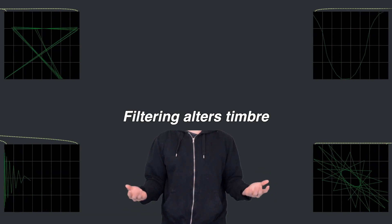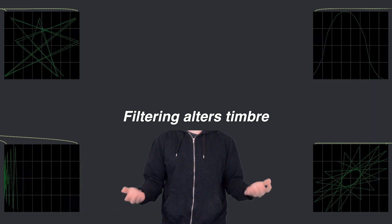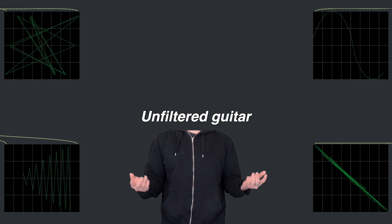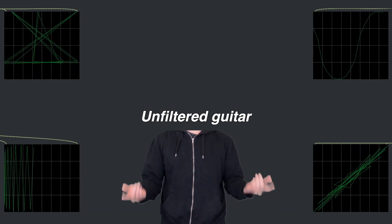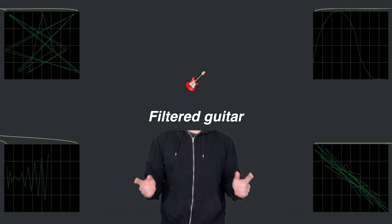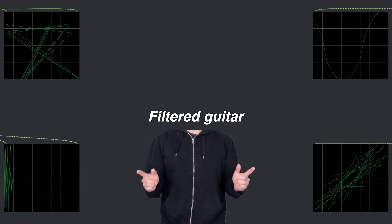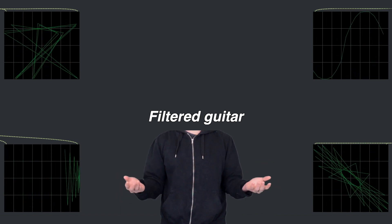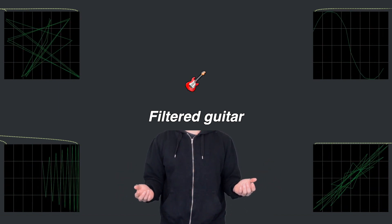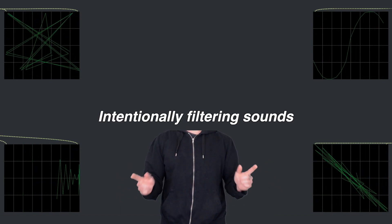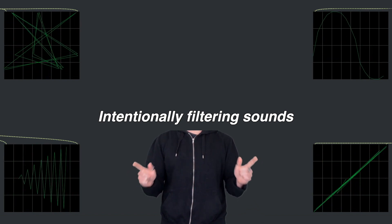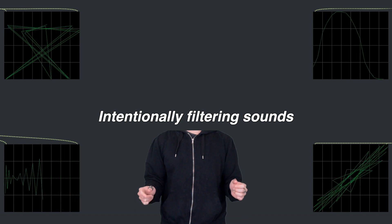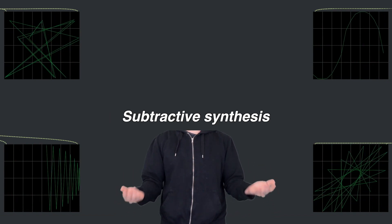When frequency contents are filtered or made quieter, the timbre is altered. For example, unfiltered guitar sound can be described as bright. But when we filter out the high-frequency contents, people use words such as warm, round, or dark to describe the timbre. So we can intentionally filter out certain frequencies to sculpt and change the timbre of a sound. This is called subtractive synthesis.